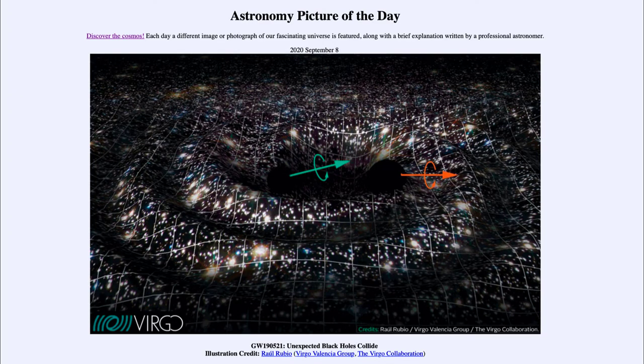Greetings and welcome to the introduction to astronomy. One of the things that I like to do in each of my introductory astronomy classes is to begin the class with the astronomy picture of the day from the NASA website, apod.nasa.gov/apod. Today's picture for September 8th, 2020 is titled GW190521: Unexpected Black Holes Collide.